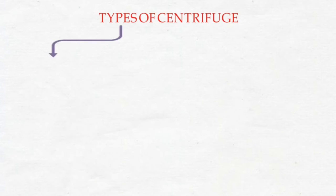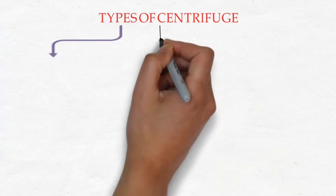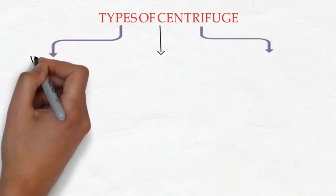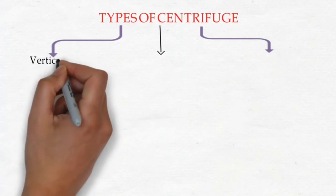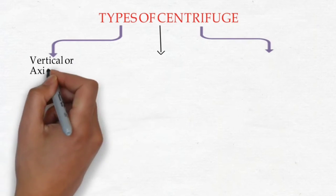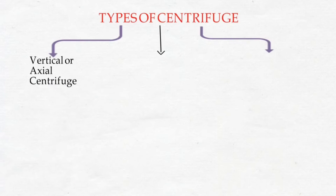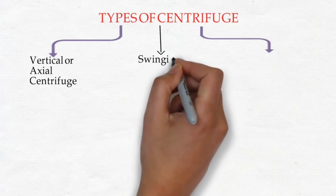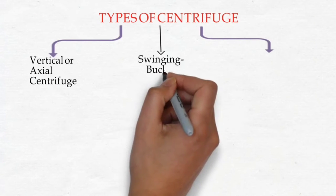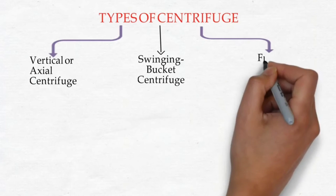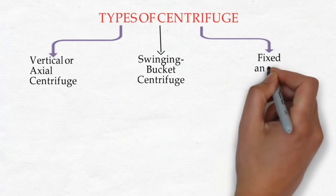Now we will see the types of centrifuge. They are mainly of three types: first, vertical or axial centrifuge; second, swinging bucket centrifuge; and third, fixed angle centrifuge.